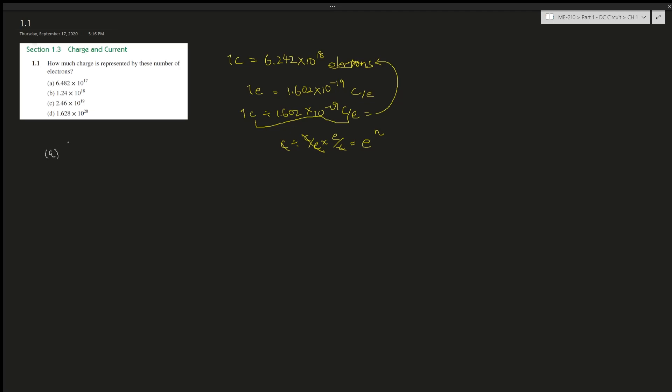So for a, we have 6.428 times 10 to the power of 17 divided by that number we calculated over here, 6.242 times 10 to the power of 18. This is a relative rounded number, obviously, just like pi. And it's going to give us 1.04 times 10 to the power of negative 1, or just 0.104 charge.